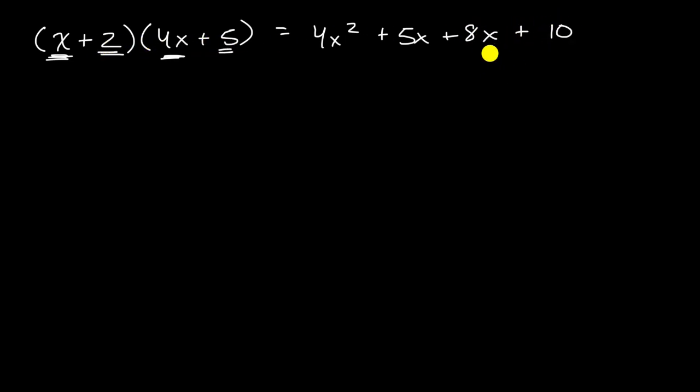If what I just did looks foreign to you, I encourage you to review multiplying binomials on Khan Academy. This simplifies to 4x² + 13x + 10. What we'll now do as we advance our algebraic careers is think about how to go the other way around.